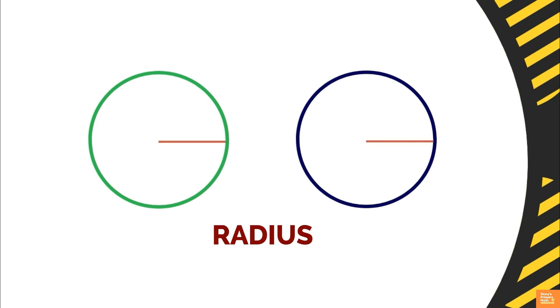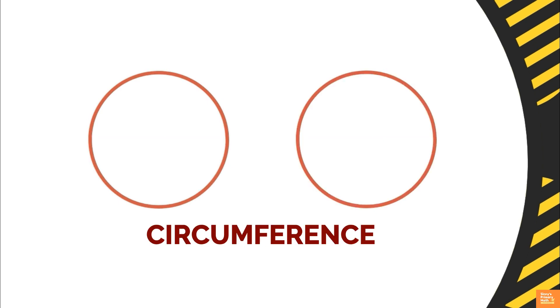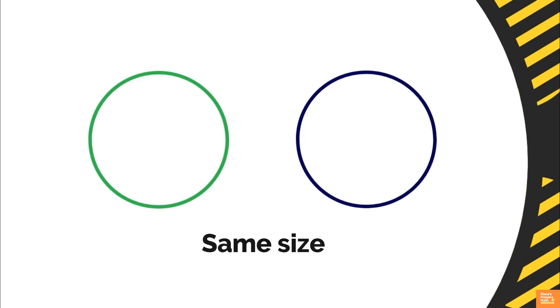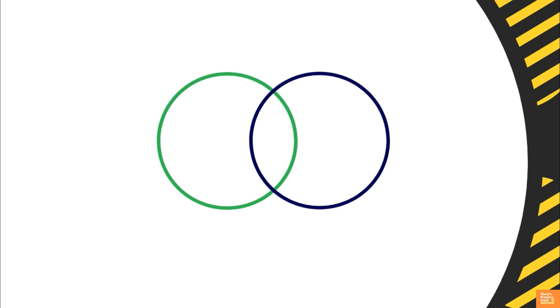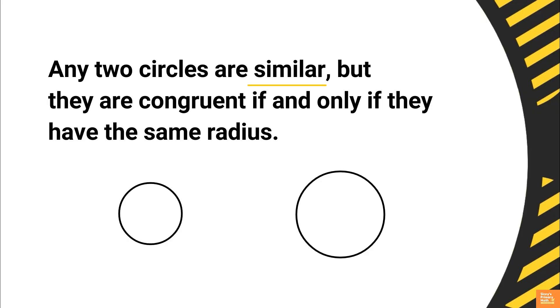The circle size can be considered in terms of its radius, diameter or circumference. Having size same, they can superimpose, that is, both circles will cover each other. Then, they are congruent circles. We can say, any two circles are similar but, they are congruent if and only if they have the same radius.